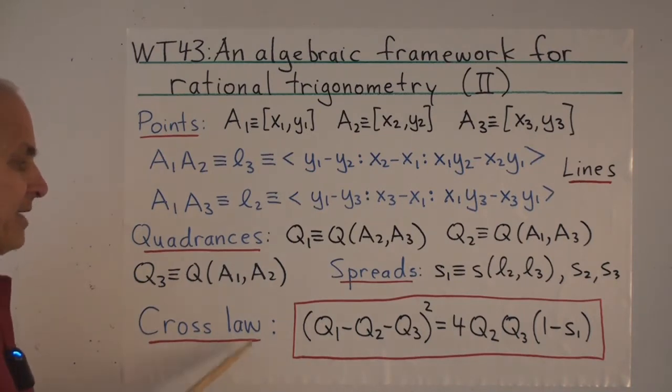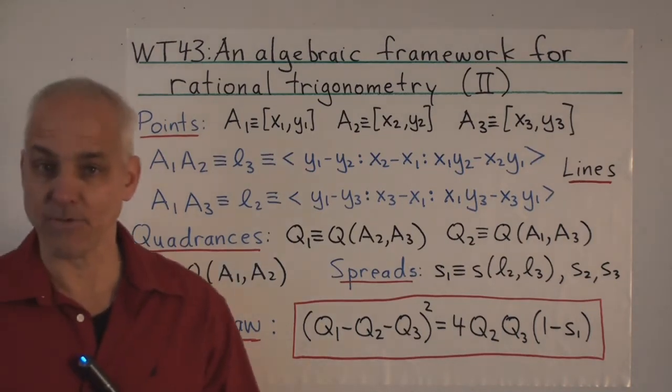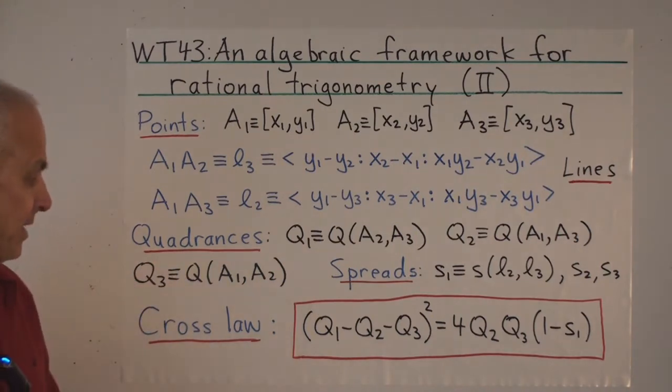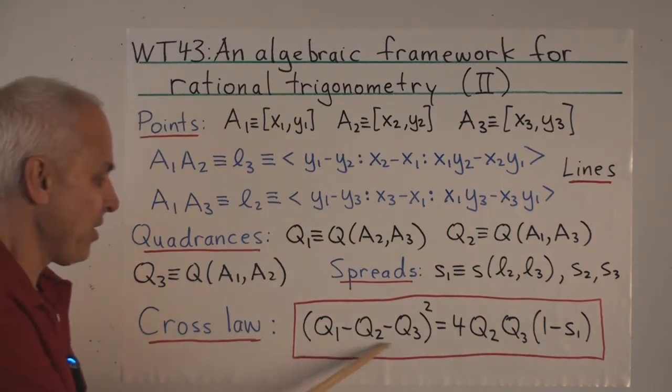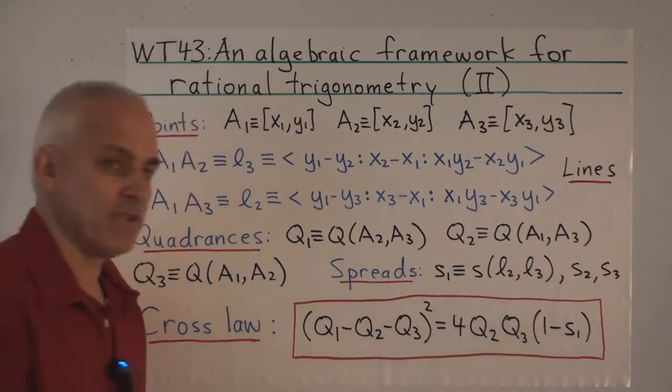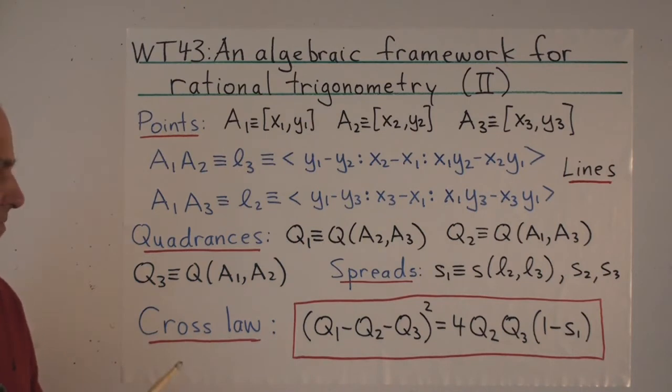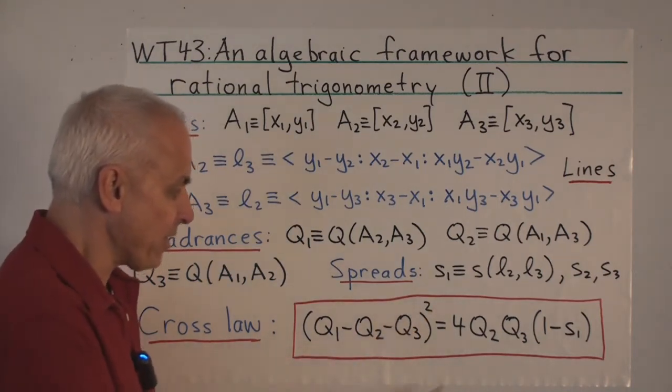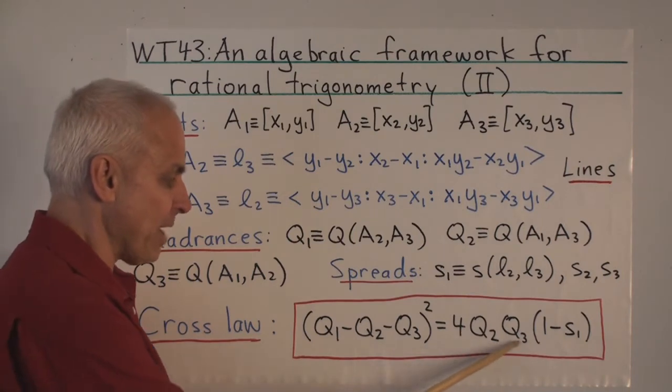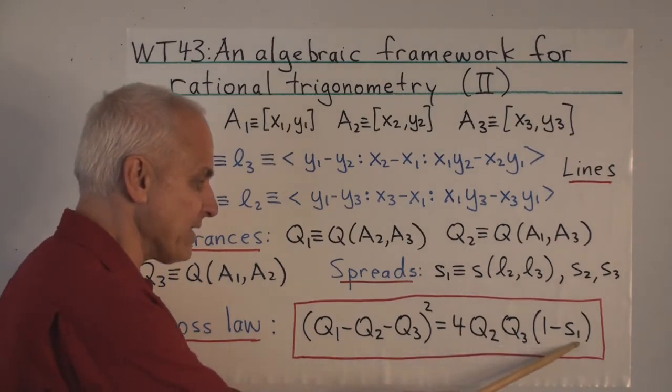And here is the most powerful law in the subject. It is the cross law. It says that there's a relationship between the three quadrances and any one of these spreads. We'll choose S1. So (Q1 - Q2 - Q3)² = 4Q2Q3(1 - S1).